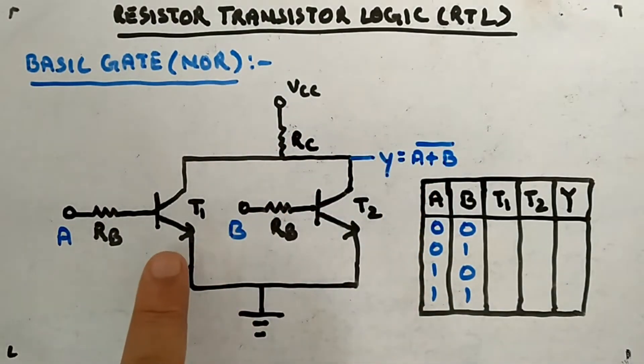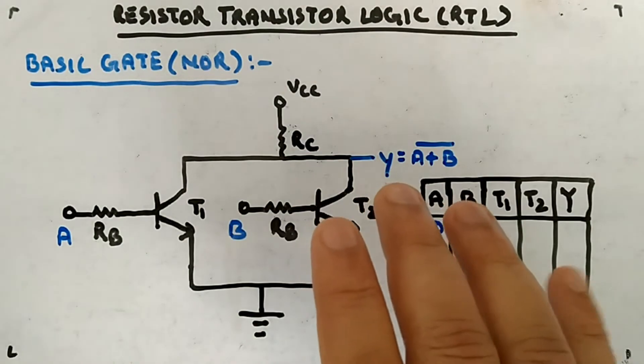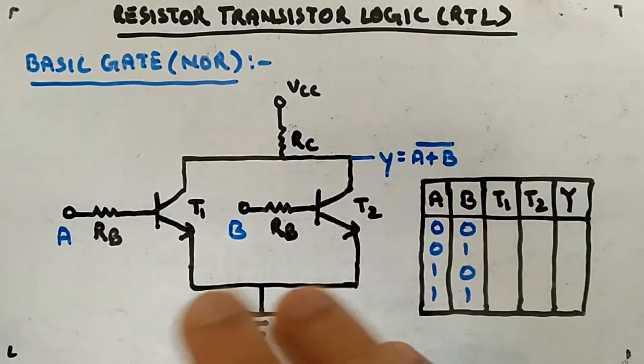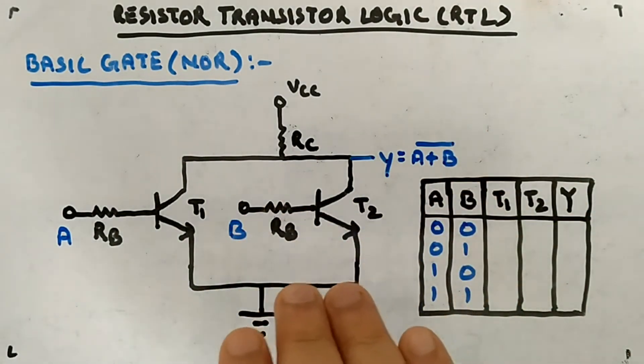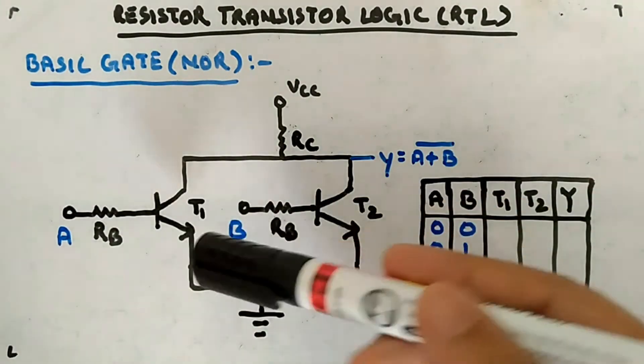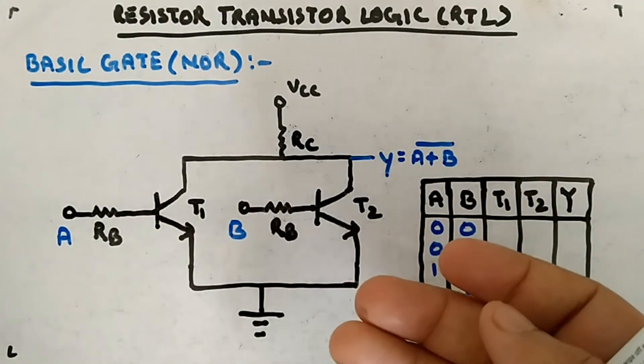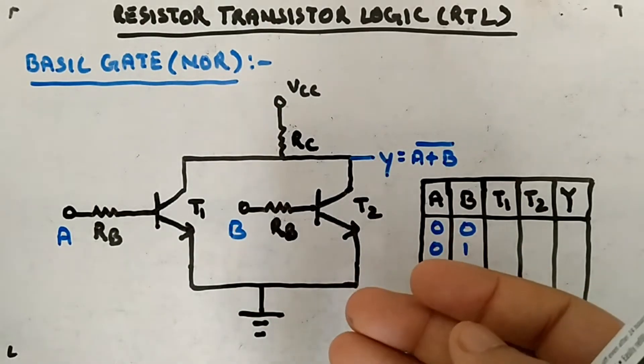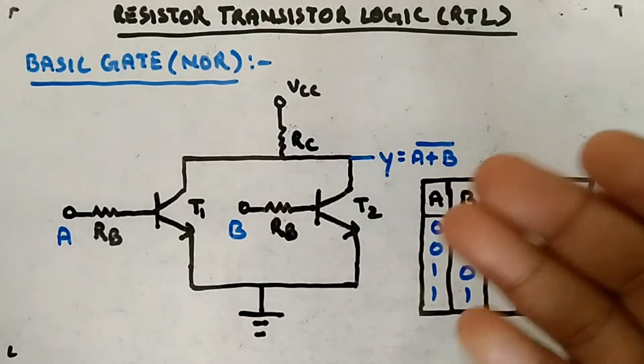How will it work? Since two inputs are there, the combinations will be 00, 01, 10, 11. The transistor works in saturation or on state, and cutoff or off state. If you apply logic one at the input of the transistor, Ib current will be flowing through it. The more the Ib current, the more will be the Ic as well.